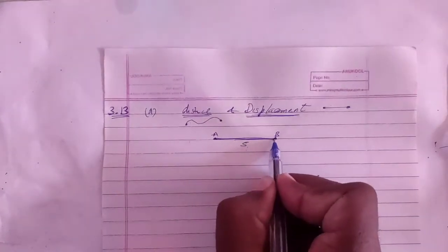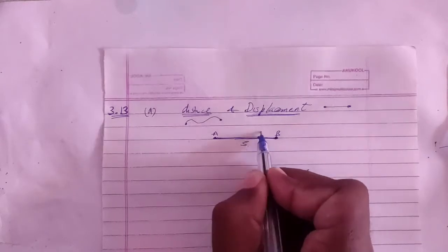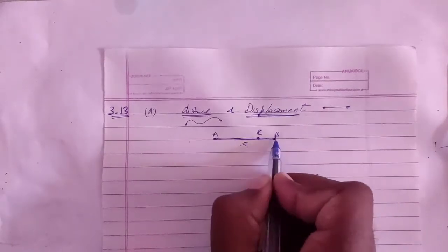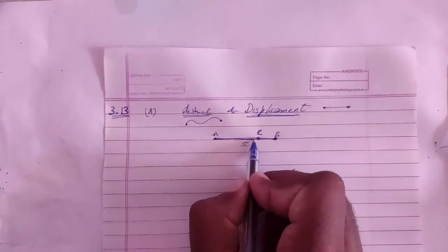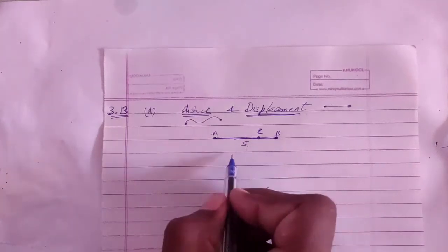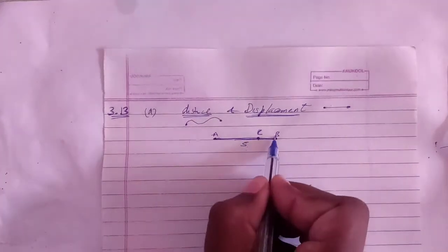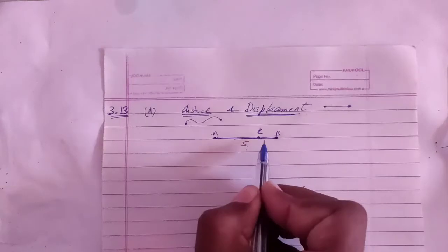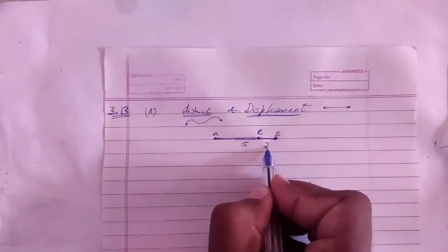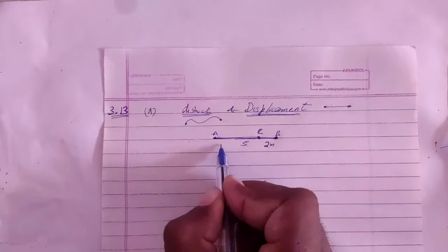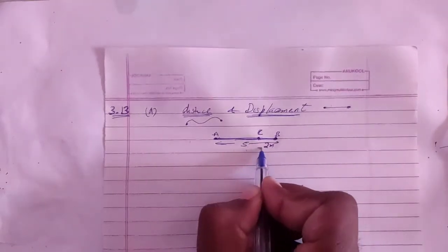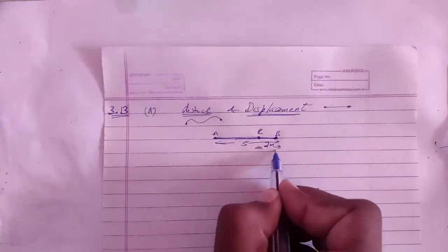Now consider the particle going from B back towards C — that is, from A to B, then B to C. This is still one-dimensional motion. If A to B is 5 meters and B to C is 2 meters (back towards A), then the total path length (distance) is 5 + 2 = 7 meters, but the displacement is only 3 meters. So distance is greater than displacement here.